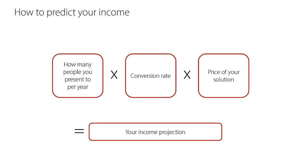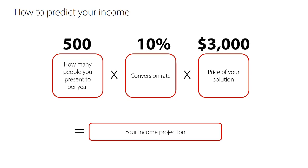You might also have a sense of how many people you tend to present to, or at least how many you'd like to present to per year. For instance, let's say you plan to speak in front of 500 people — do a workshop or webinar for 500 people. That's a good goal. And you know that on average you get a 10% conversion rate, meaning 10% of people buy your program at $3,000, which leaves you with an income projection of $150,000.